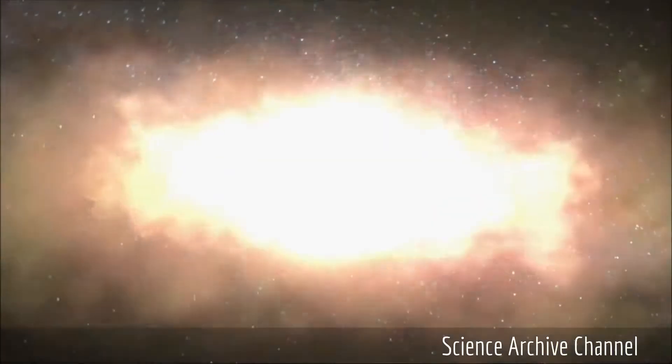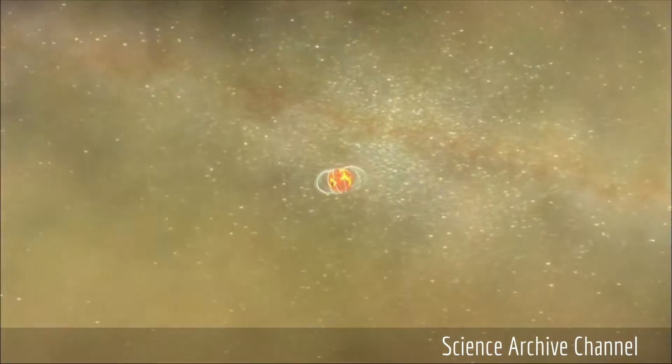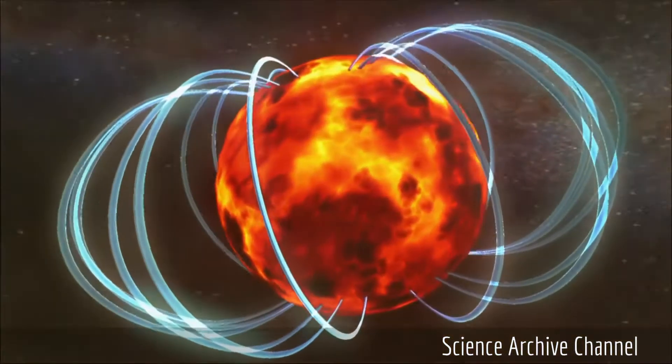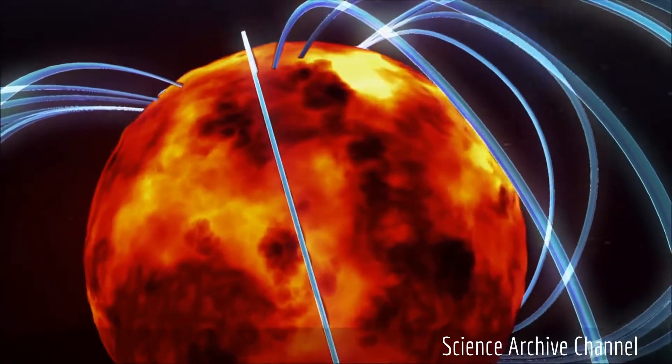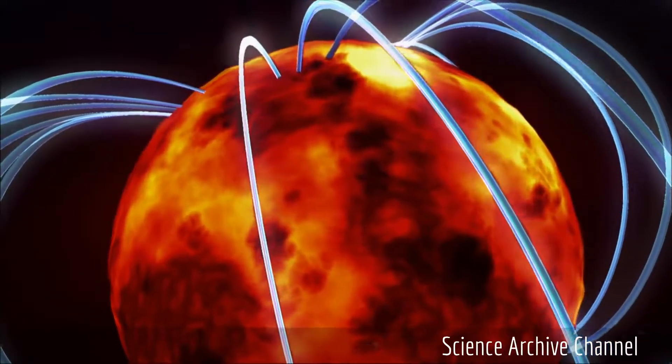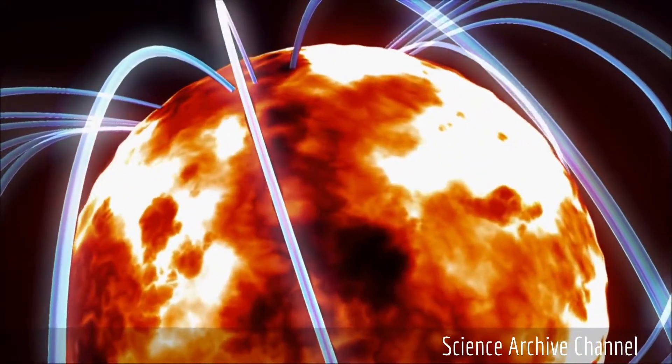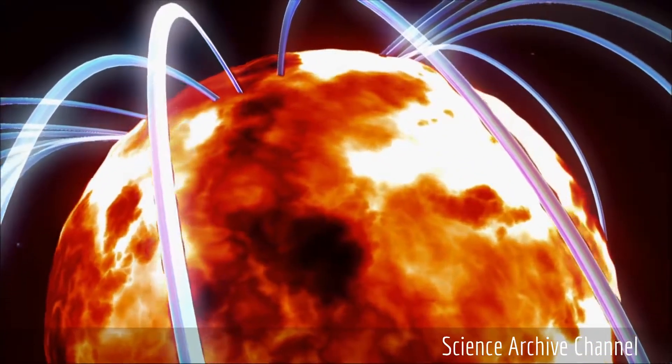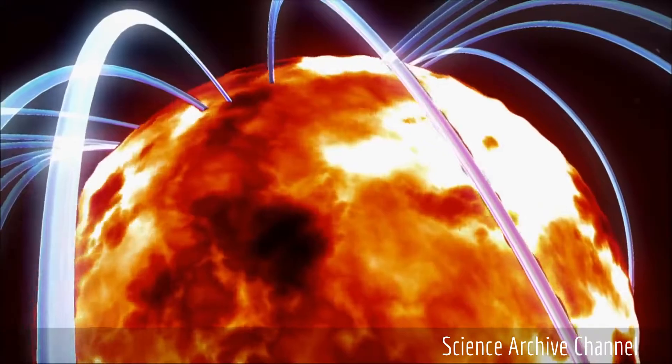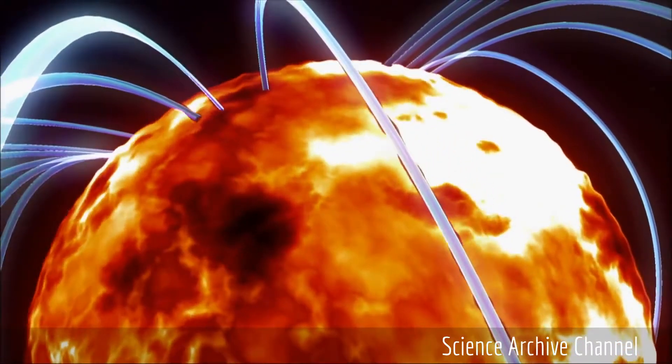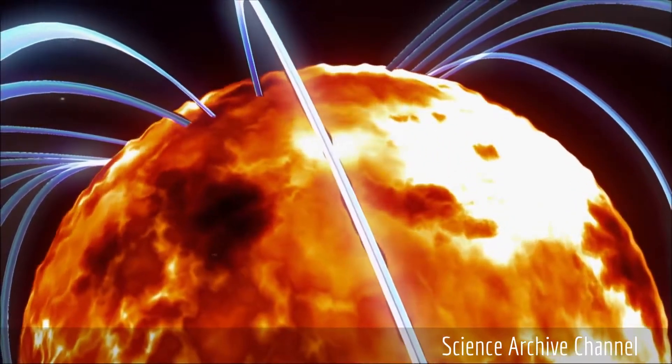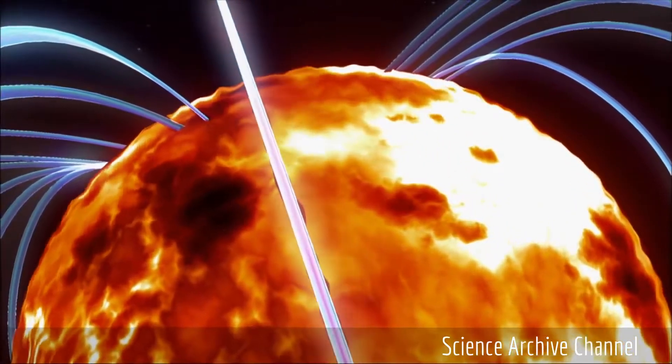Magnetars are born out of the death throes of massive stars. When a star dies, it begins to collapse and go supernova. Sometimes, a dense neutron star forms from the cinders of that supernova explosion. During the process, a few neutron stars become magnetars, which possess a strong magnetic field.